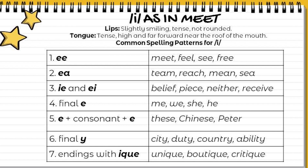IE or EI as in belief, peace, neither, receive. Final E as in me, we, she, he.